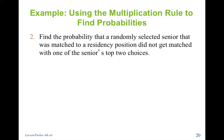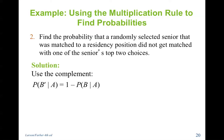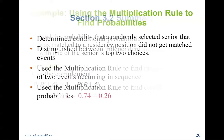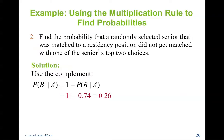Find the probability that a randomly selected senior matched to a residency position did not get matched to one of their top choices. We use the complement: one minus 0.74 equals 0.26.